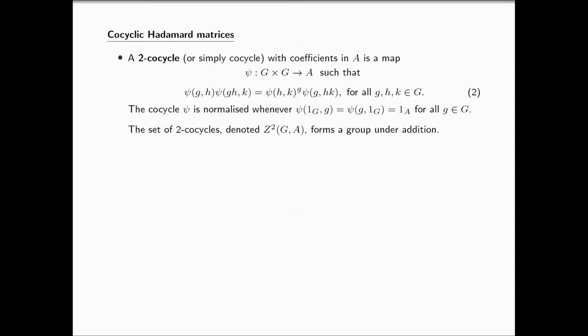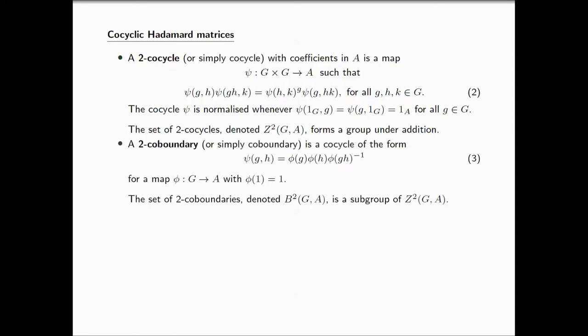Cocycles are not that rare, and hopefully my following definition is going to convince you of that. A very special type of cocycle is a co-boundary. A 2-co-boundary is a cocycle that looks like this, for a map by from G to A with a certain structure, shown in equation 3. Whenever you have a map from a group to an abelian group, you can always construct a cocycle in this form. The set of two co-boundaries forms a subgroup of the set of cocycles.